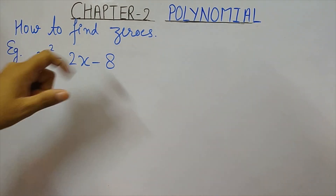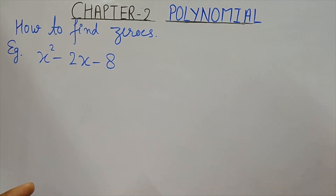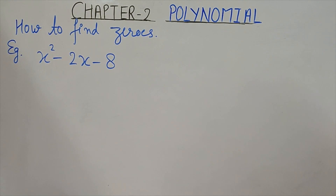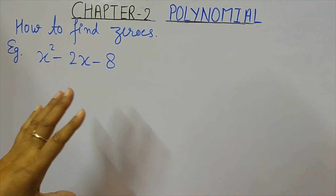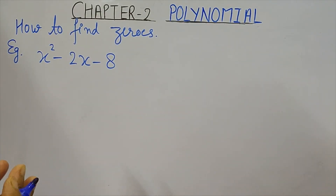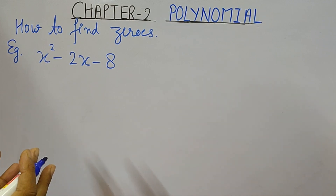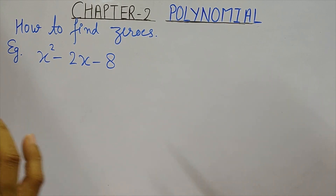Now let us understand how to find the zeros of a polynomial — our main focus is on the quadratic. For basic concepts from Class 9th Chapter 2 polynomials, I suggest watching that video first. To find zeros, we need to factorize the given polynomial — either by using an identity, by middle term splitting, or by taking common factors.